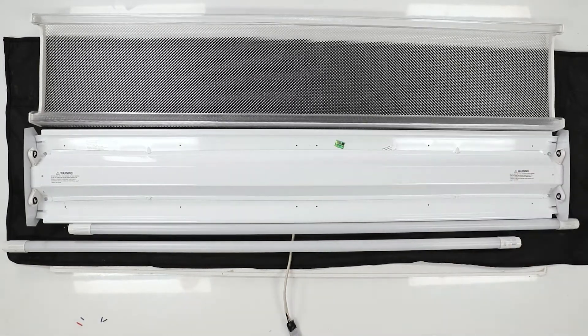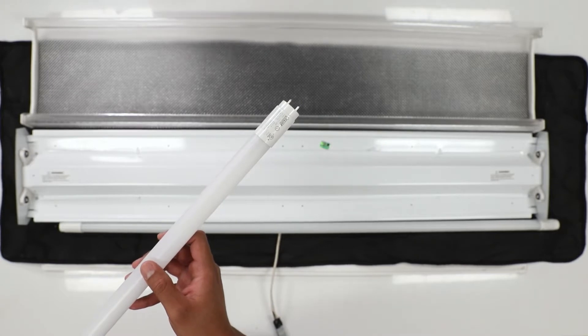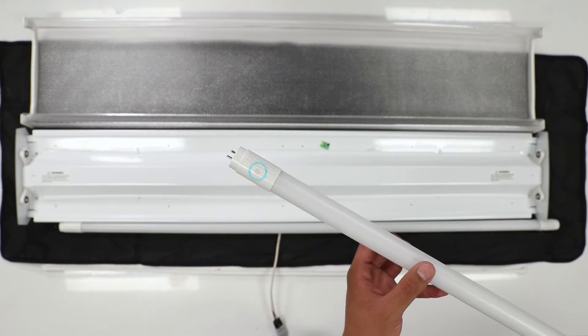Install your Fidolectric Type B linear tube by inserting the line and neutral ends into their corresponding sockets.